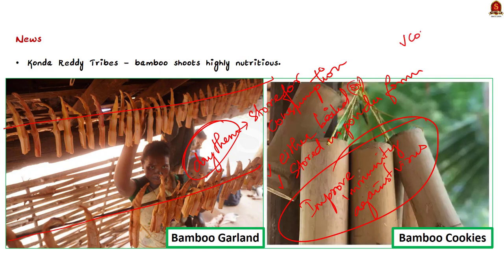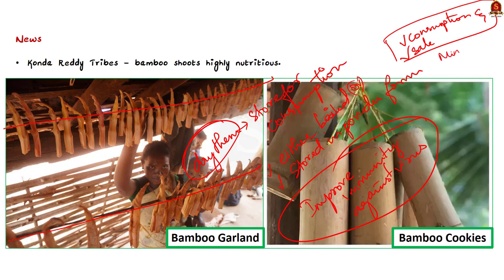Bamboo shoots are given much importance because they improve immunity against viral fevers, and even non-tribal people have started consuming them due to their nutritious value. The Kondareti tribes collect bamboo shoots both for their own consumption and for sale. Bamboo shoots are classified as minor forest produce, and tribal people have the right to exploit their commercial value for their livelihood, though this must be sustainable in nature.